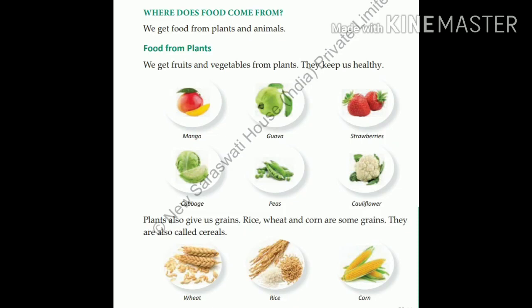We get food from plants and animals. From plants we get fruits and vegetables to keep us healthy — for example mango, cabbage, cauliflower. Plants also give us grains. Rice, wheat and corn are some grains; they are also called cereals.